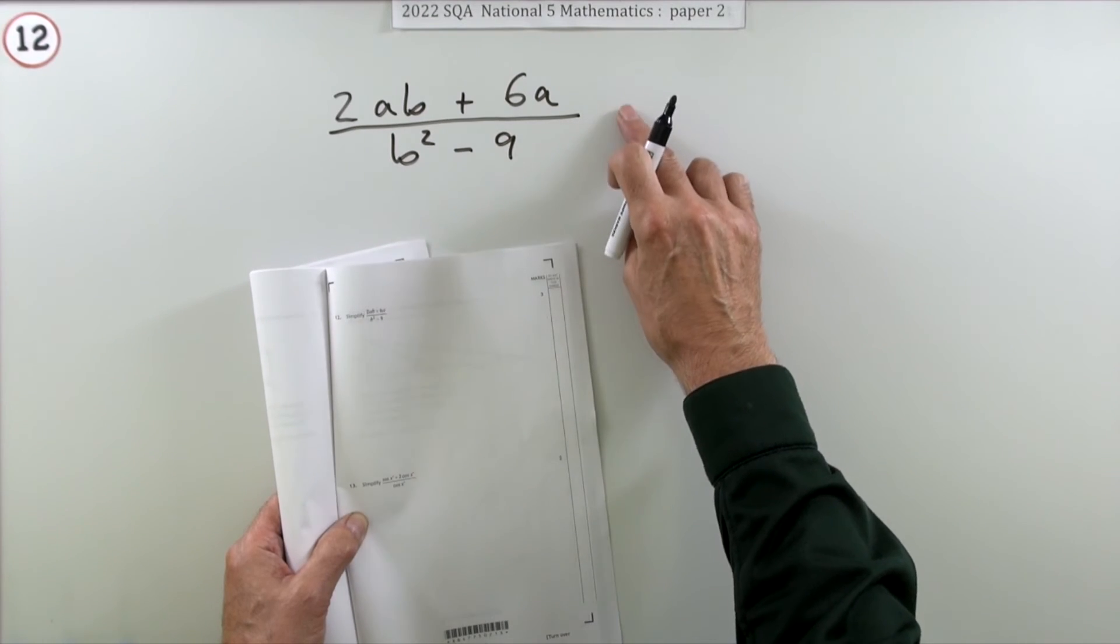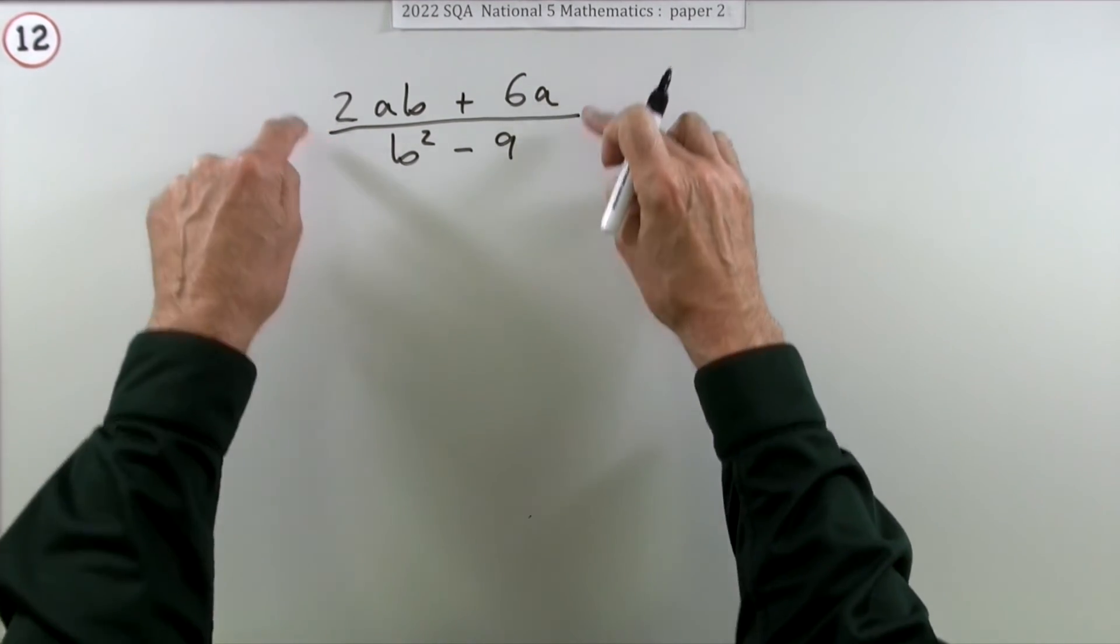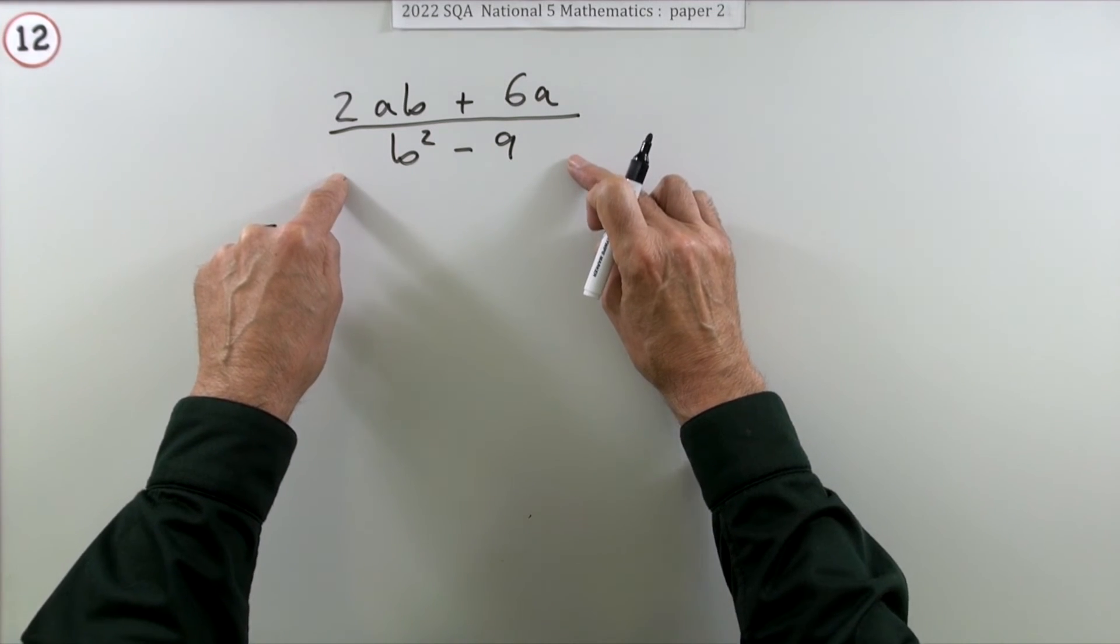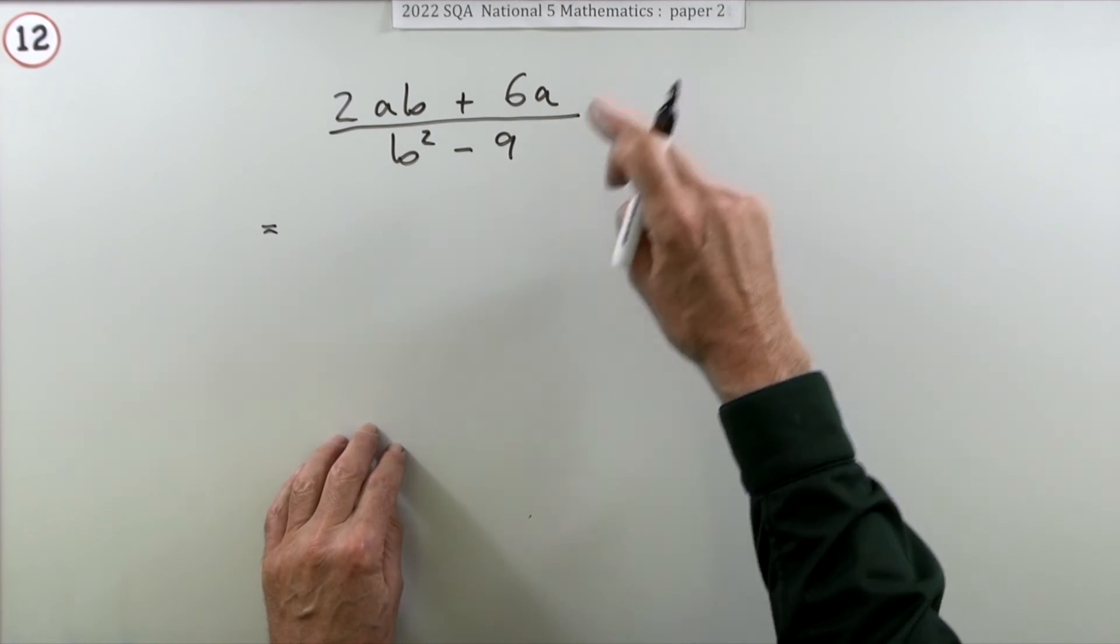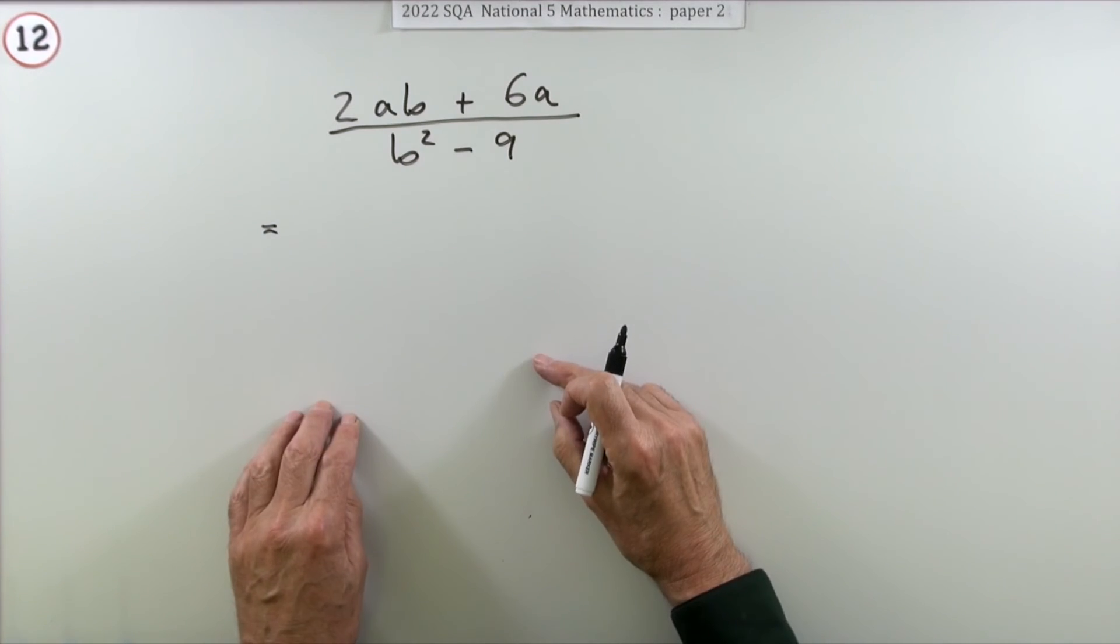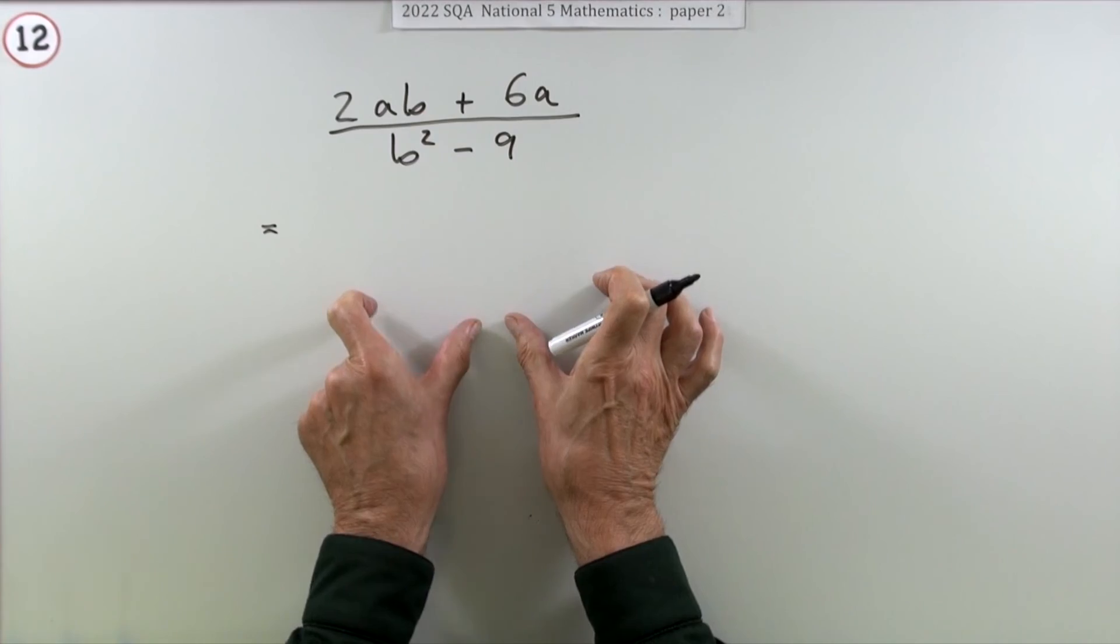Simplify this expression for three marks. Well, since it's a fractional expression, if it can be simplified, it means you can do some cancelling. There should be something that will divide out from the top and the bottom, so the first step will be factorize it to make it into products, because it's only products that you can cancel out.